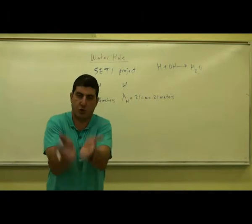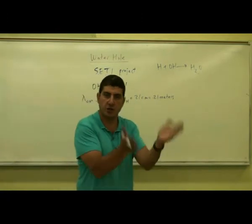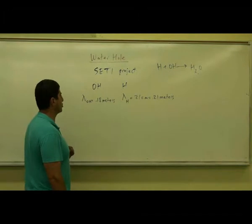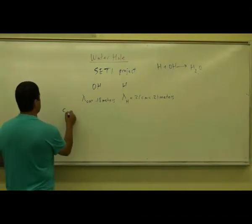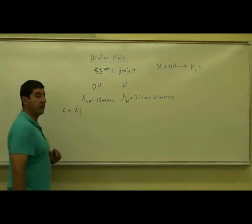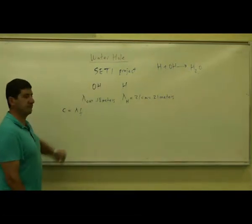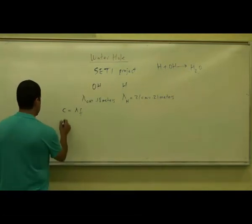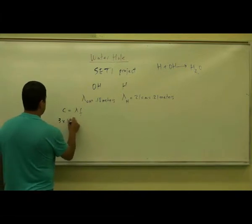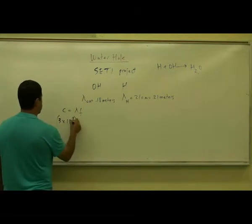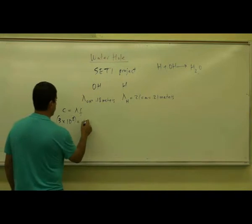And it happens to be between H and OH, that region. So let's calculate the corresponding frequency. We know that all electromagnetic waves satisfy the equation: the speed of light is lambda times F. The speed of light is 3 times 10 to the 8 meters per second. And then the wavelength is 0.18.